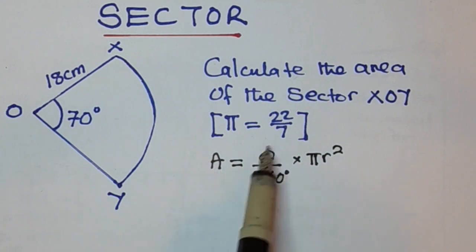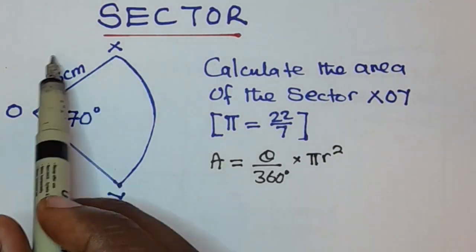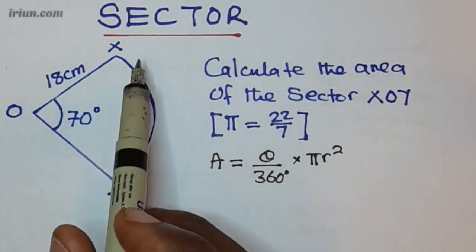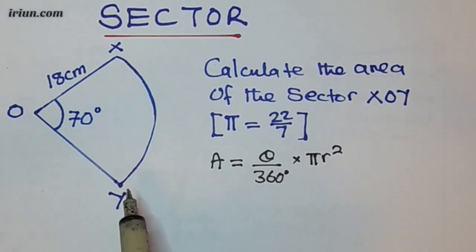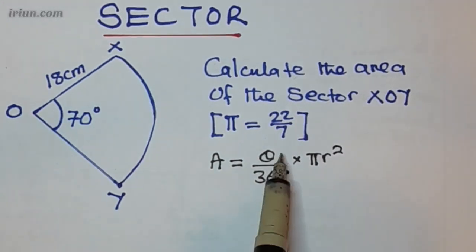So we use this formula, theta over 360 times pi r squared, because a sector is just part of a full circle. So this is just a fraction of a full circle. That's the reason why we use this times the area of the full circle, which is pi r squared.